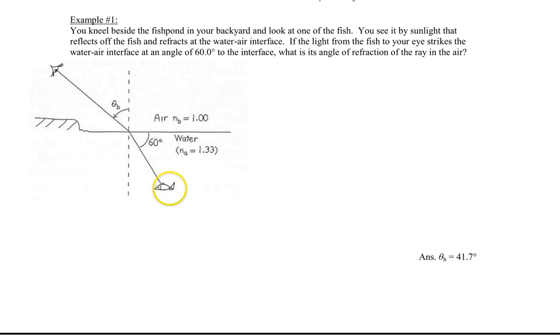You see light reflecting off the fish from the sun that hits the surface at an angle of 60 degrees and refracts outwards towards your eye. We're asked to find the angle of refraction, theta b.